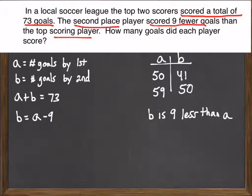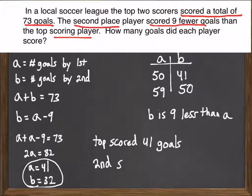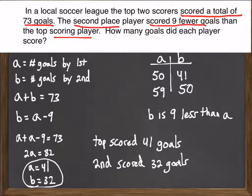Once we have our system of two equations, we proceed to solve it. This one works by substitution. Solving the system, I find A is 41 and B is 32. To answer the question — how many goals did each player score? — the top scorer scored 41 goals and the second place player scored 32 goals.